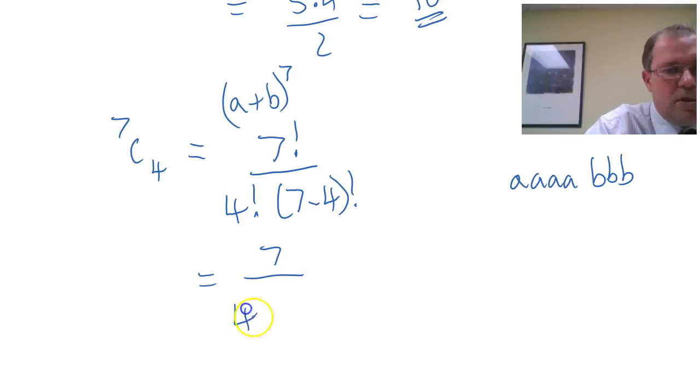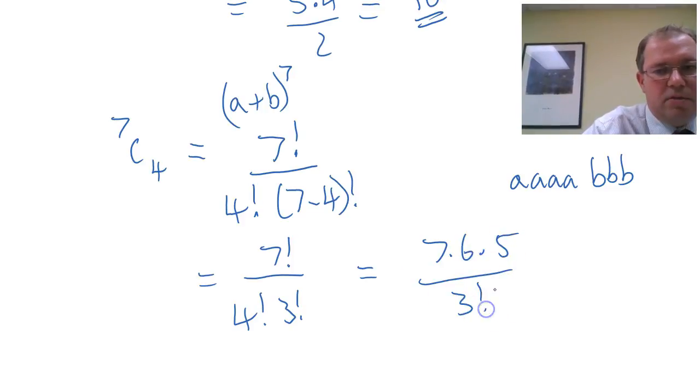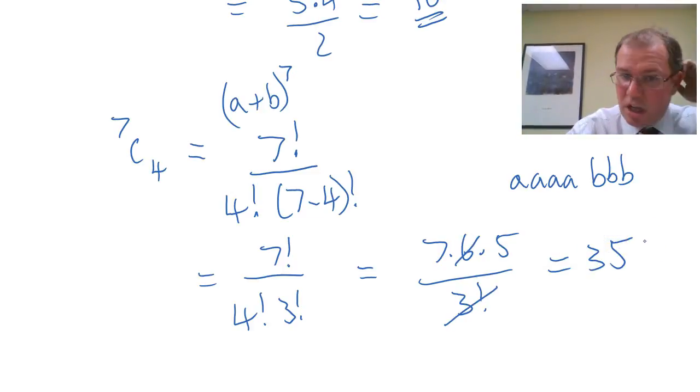But you can see how I'm doing this because we want to generate a formula. And if we simplify 7 factorial over 4 factorial 3 factorial, the 4 factorial will cancel, leaving me 7 times 6 times 5 over 3 factorial. 3 factorial is 6, so I end up with 7 times 5, so 35 different ways. You can, of course, use your calculator.